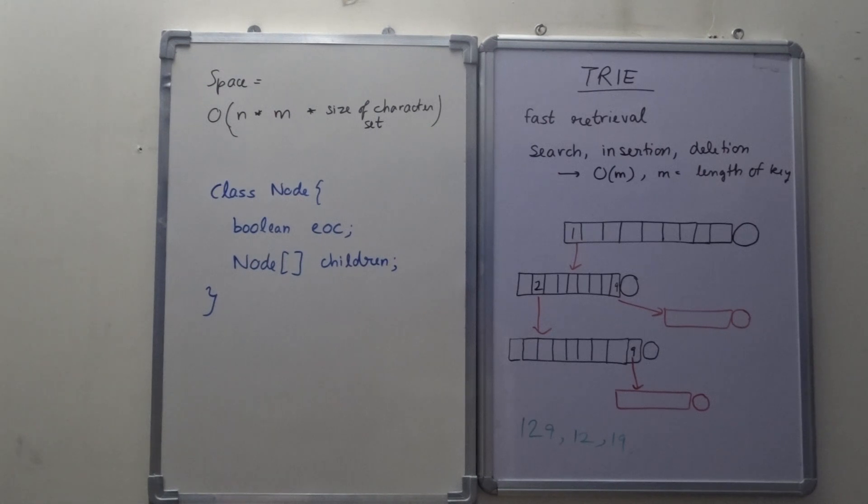Now here in Trie, it is independent of the number of nodes, i.e. the number of keys, and it depends only on the length of the key, which is small and thus can be approximated as big O(1). Now let's see how we can do this.